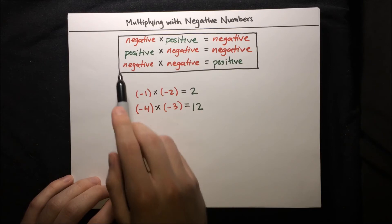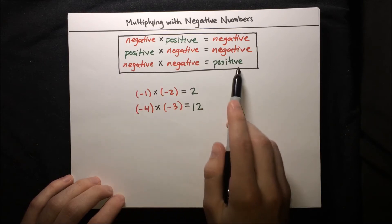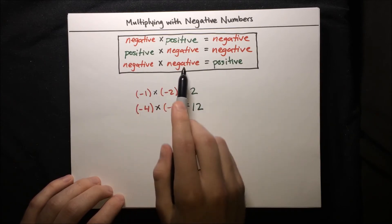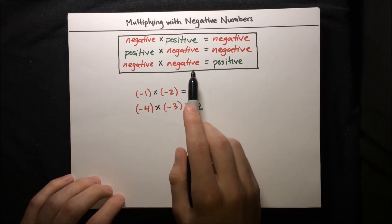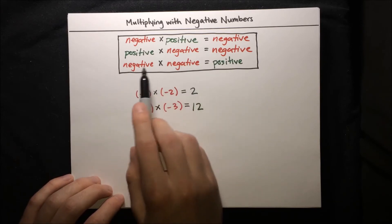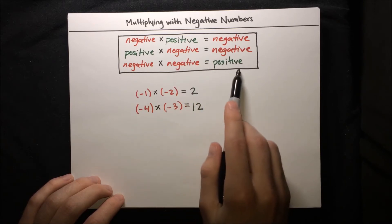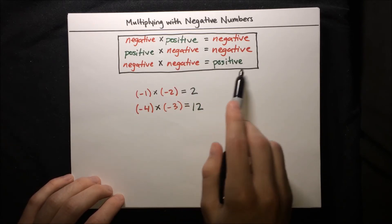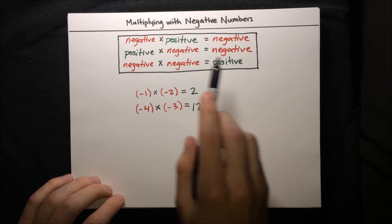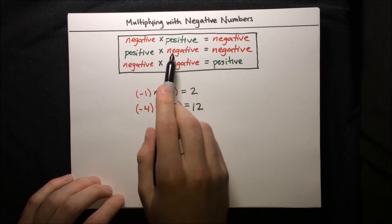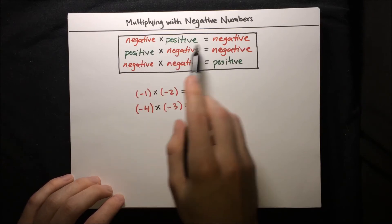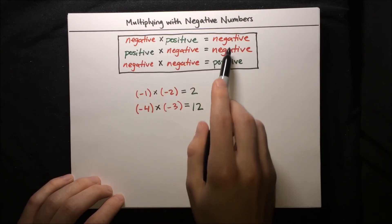An easy way to remember these rules is to think that negatives cancel out when you multiply them. Just like subtracting a negative cancels into addition, multiplying two negatives cancels the negative sign and gives a positive result. On the other hand, multiplying a negative with a positive leaves just one negative — nothing cancels it — so the result is negative.